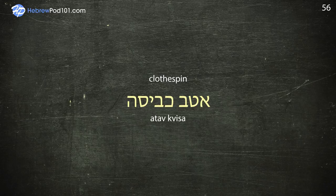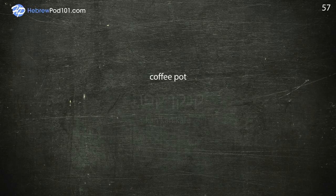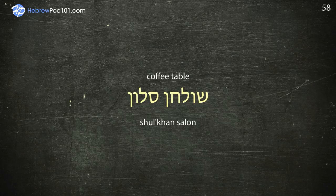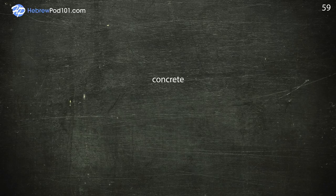Coffee Pot — Kankan Café. Coffee Table — Shulchan Salon. Concrete — Betul. Condominium — Dira.